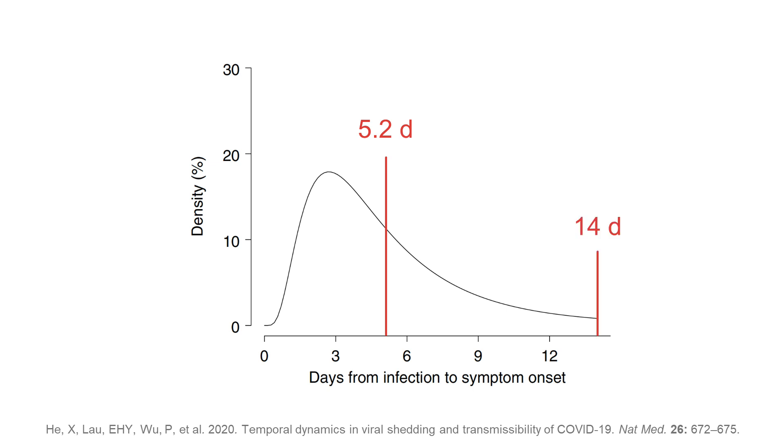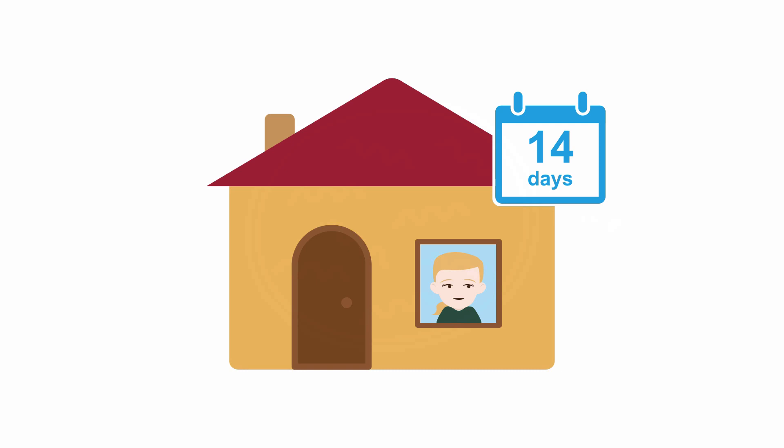If a patient remains asymptomatic 14 days after exposure, the patient is unlikely to develop symptoms. This is why people have been told to self-isolate or quarantine for 14 days.